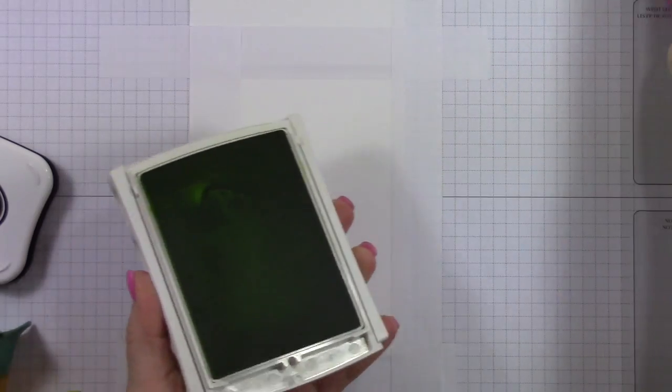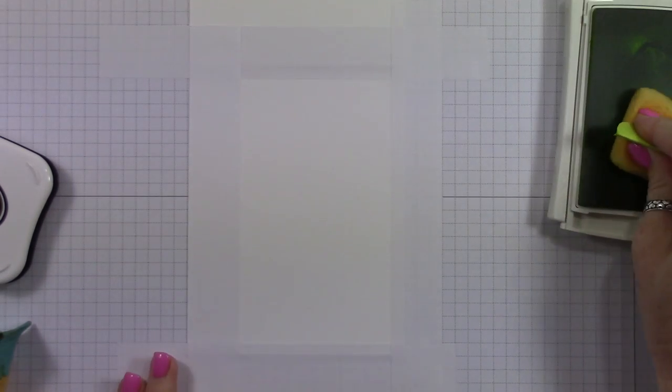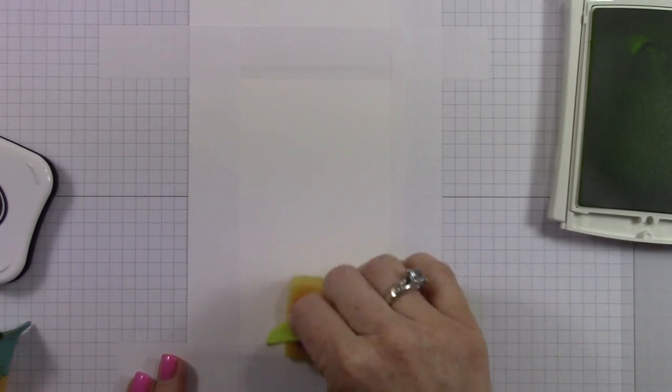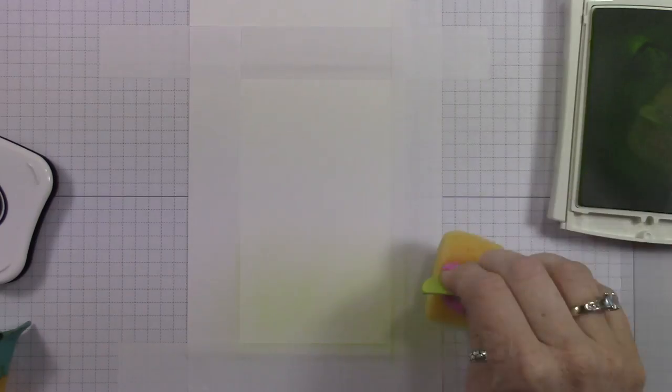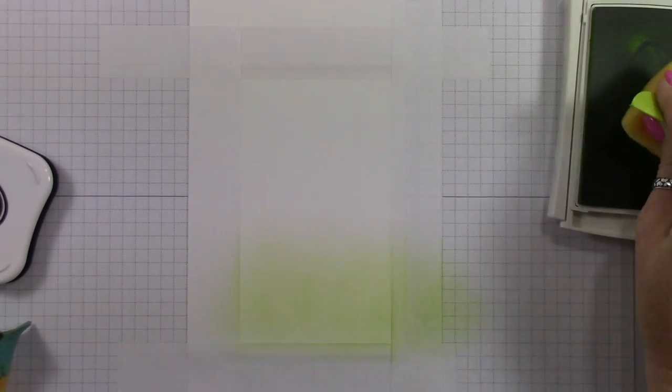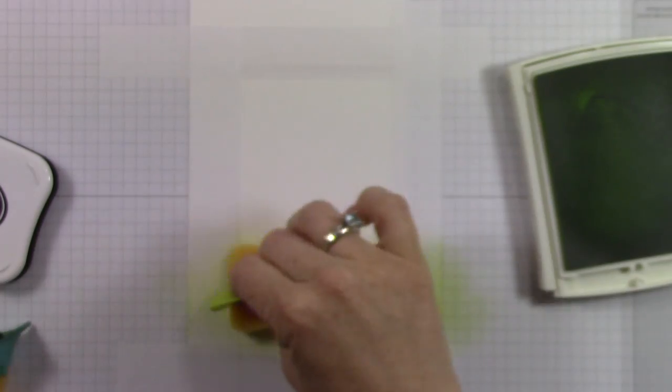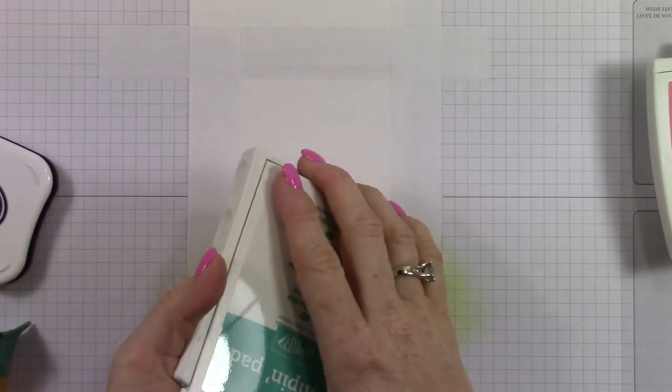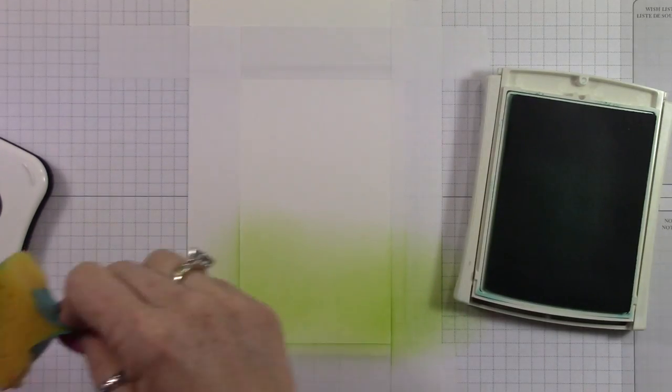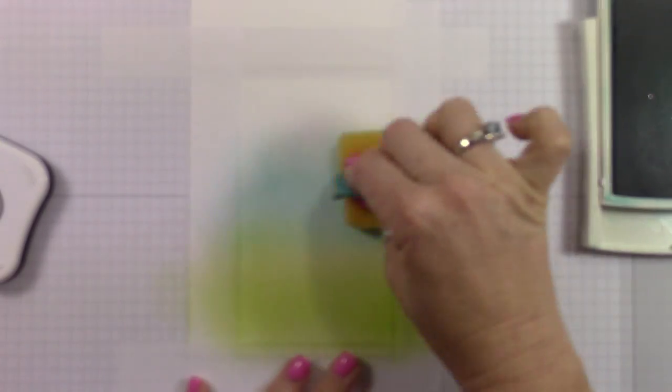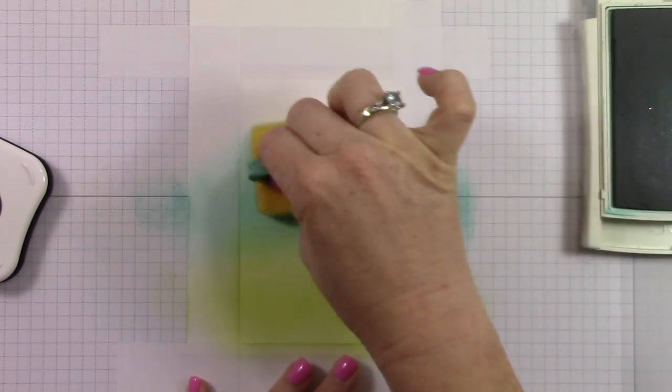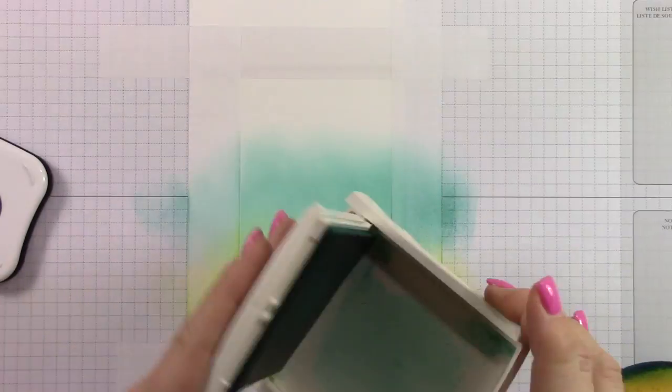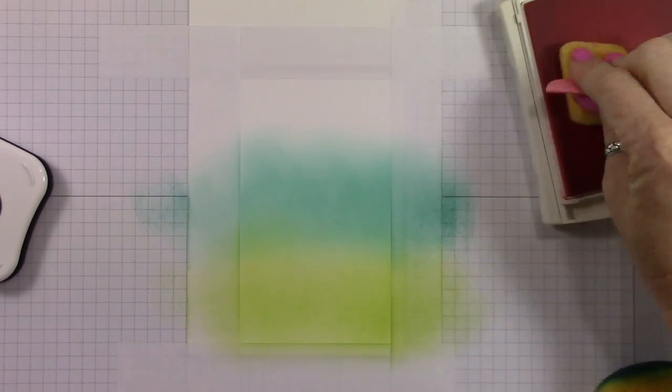We're going to use my favorite color combination, these three colors. I'm using lemon lime twist, and you're going to see the video sped up quite a bit here because ink blending is a process. You see how slow it's starting out, and you have to really layer the inks on top of each other to get them to be a really nice blended look without being splotchy.